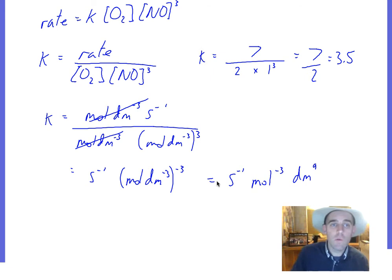Each time you do a rate equation, you have to work out the units for k because it can be different for different reactions.